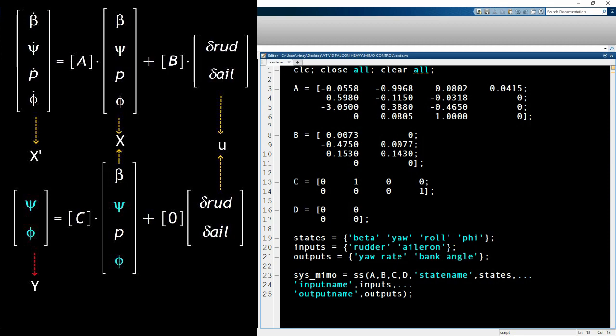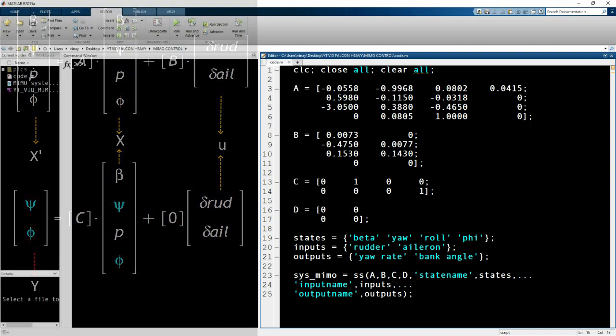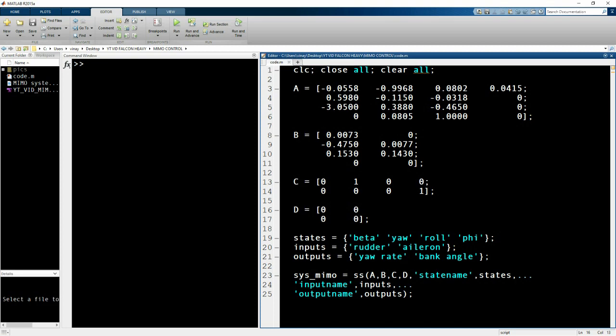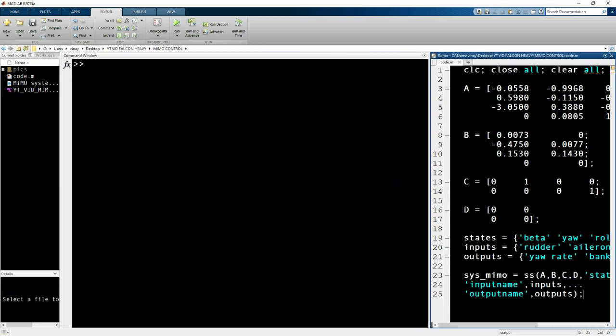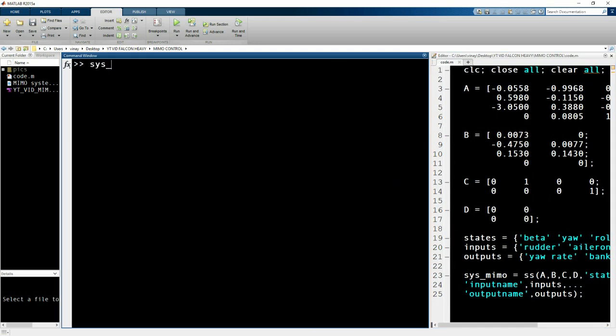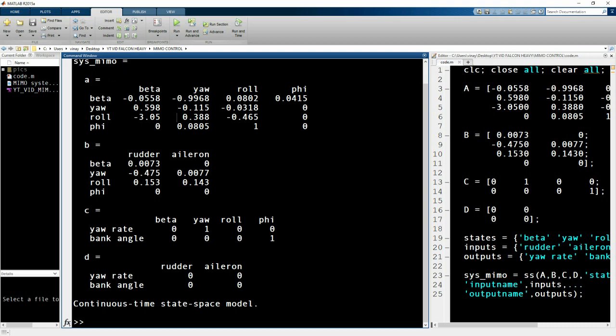The SS command converts this into the state space representation, and you can see what it looks like here. Since we have four states, our A matrix is four by four. Let's run this and see what it looks like. Type in sys_mimo and you can see your A, B, C, and D there, and it shows you a better representation.